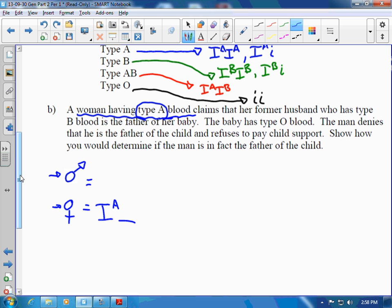She claims that her former husband who has type B, so the husband here has type B, there's an IB. The reason I don't fill in that second letter is because he could still be type B if this is a big letter or if it was a little one. So because I'm unsure about which one it is, I'm just going to leave it blank and know that I have to fill that in somewhere.